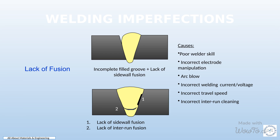Another factor is incorrect travel speed, where the welder moves too fast or too slow, affecting the fusion of joint edges. Lastly, improper inter-run cleaning, such as failing to remove slag or debris between weld passes, can contaminate the weld and weaken its integrity. Understanding these causes is essential for welders to identify and address the issues that may arise during the welding process, ensuring high quality and reliable welds.